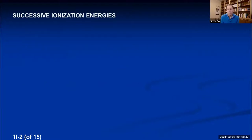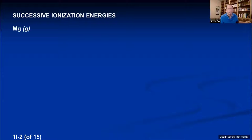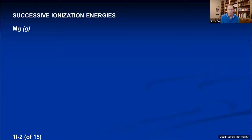If you have an atom with multiple electrons — and all atoms except hydrogen have multiple electrons — you can supply energy to pull off one electron, two electrons, three electrons. The energies required for each successive removal are called successive ionization energies. We'll discuss these using magnesium: atomic number 12, meaning a magnesium atom has 12 protons and 12 electrons, so it has 12 ionization energies.